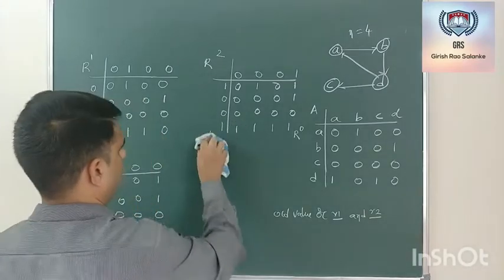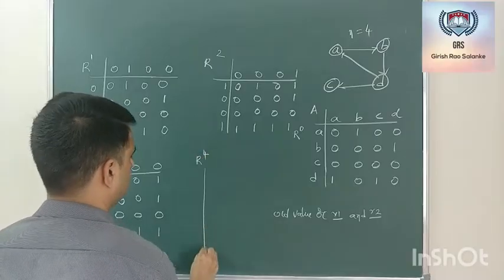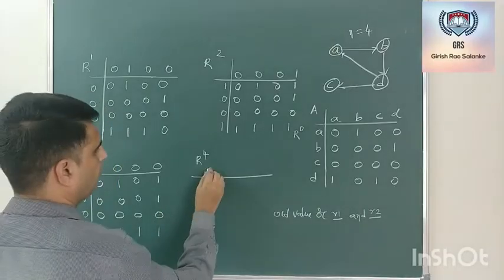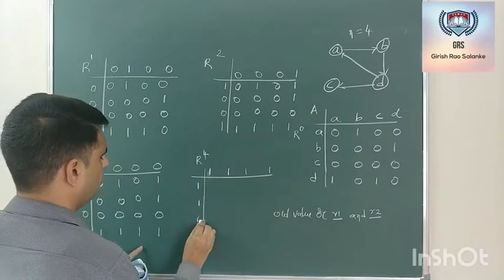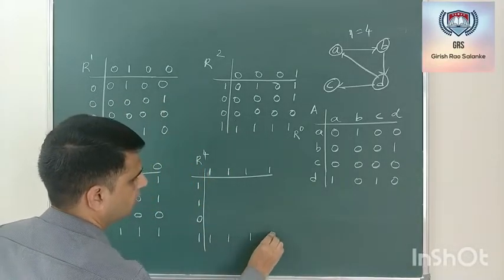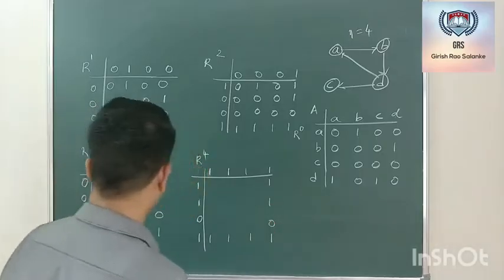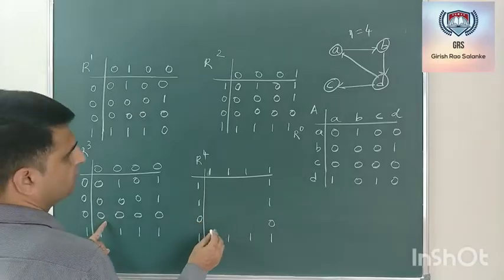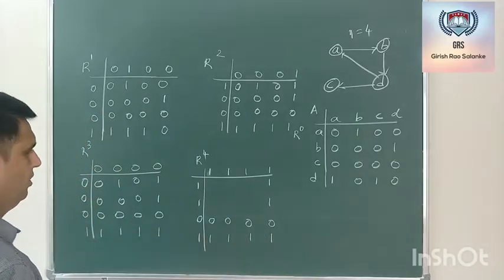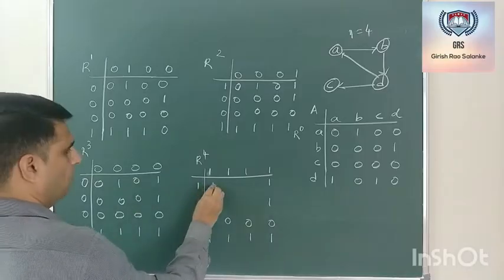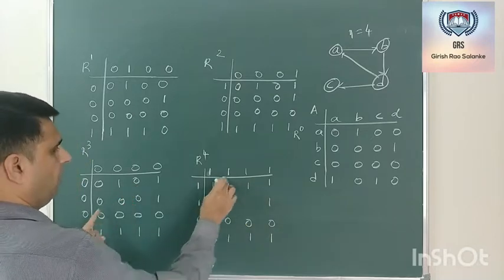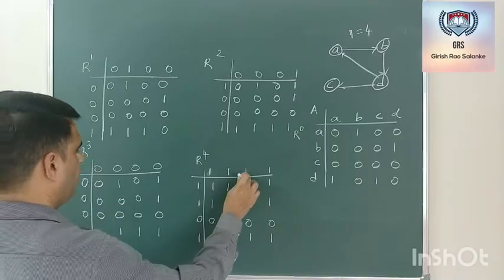Now go for the fourth iteration. The reference is fourth row and fourth column. Fourth row is 1, 1, 1, 1. Fourth column is 1, 1, 1, 0, 1, 0, 1. The fourth row and fourth column retain as they are. Third row reference is 0, so it takes the value of the previous iteration. For remaining cells: 1 AND 1 = 1, 1 OR 0 = 1; next cell 1 AND 1 = 1, 1 AND 1 = 1; and so on — all become 1.